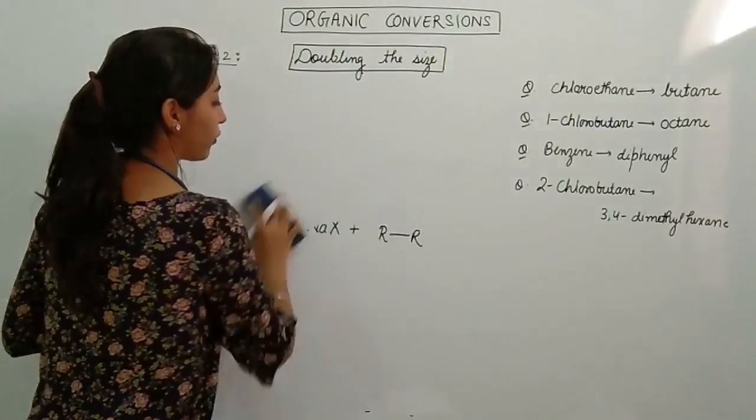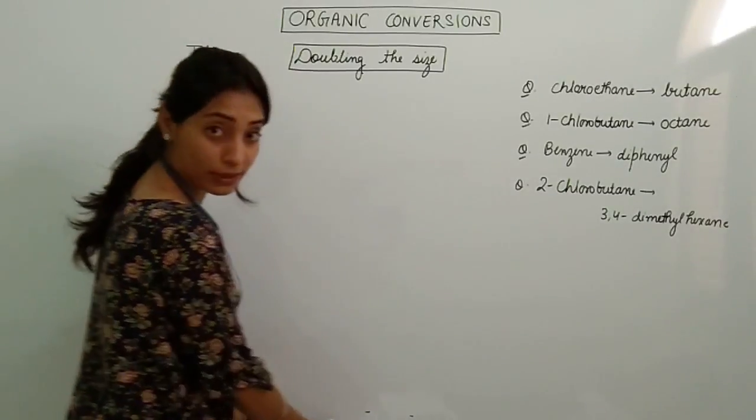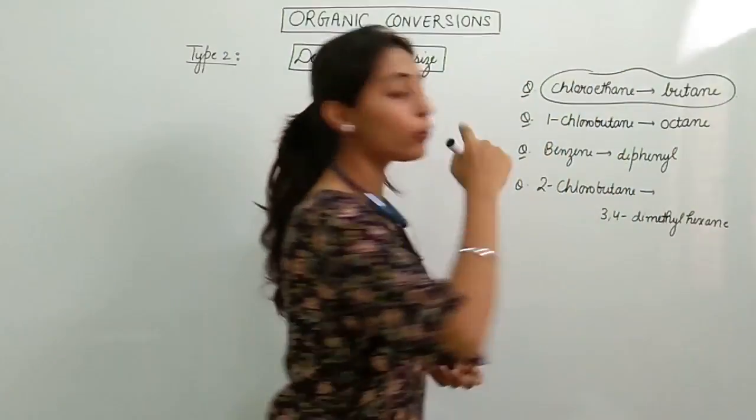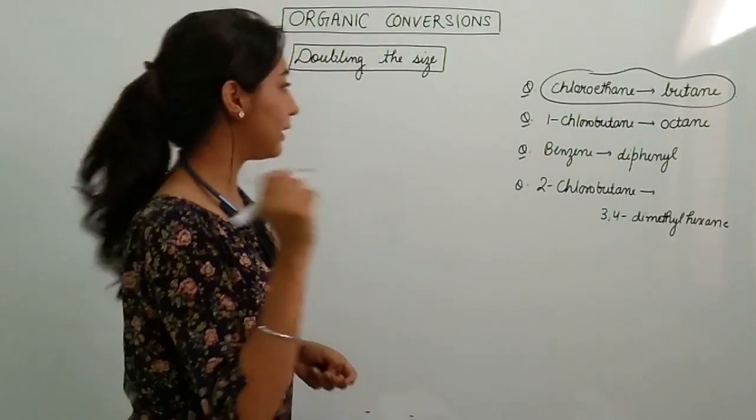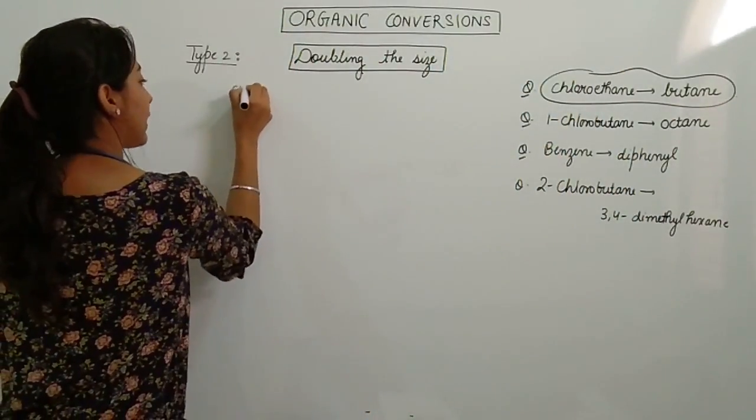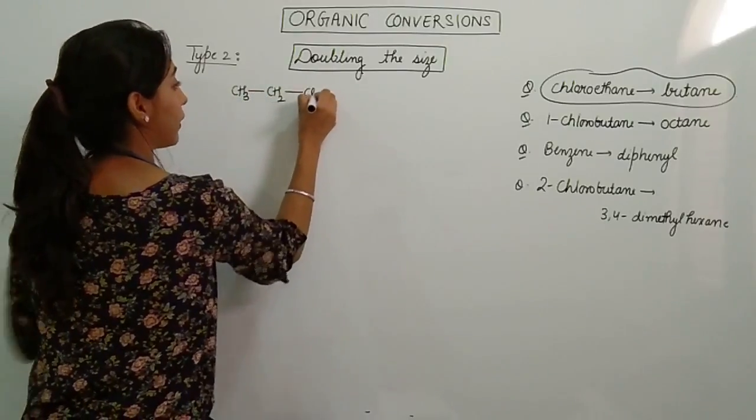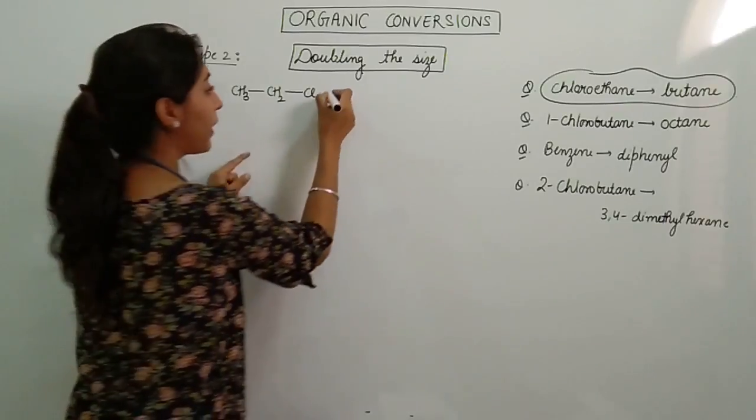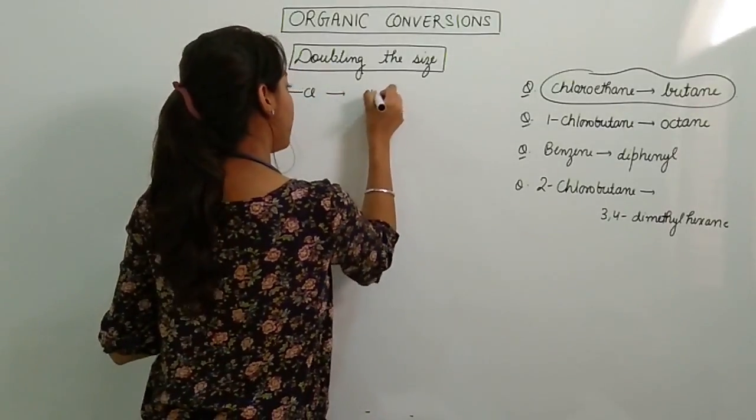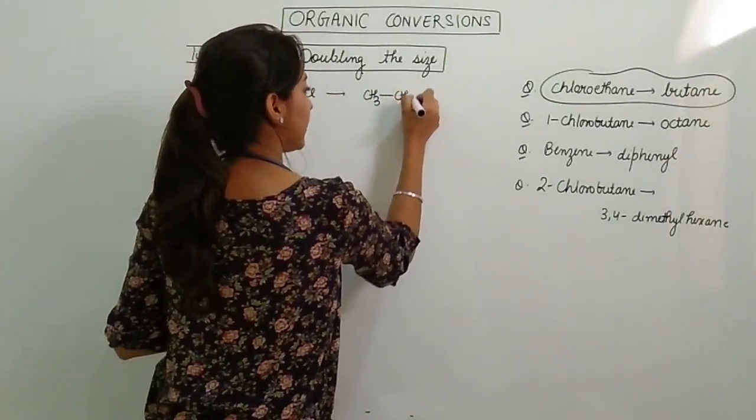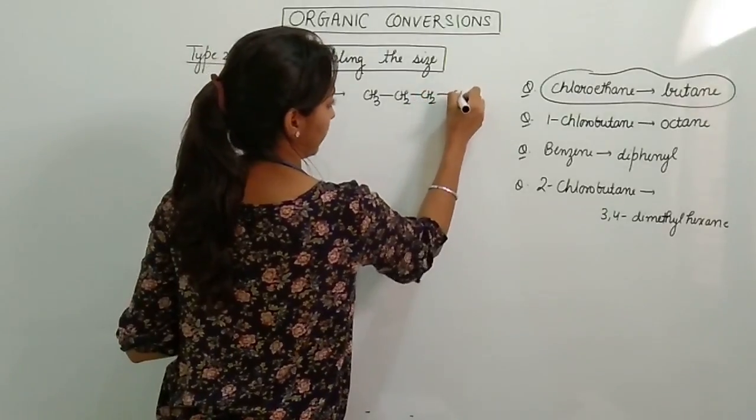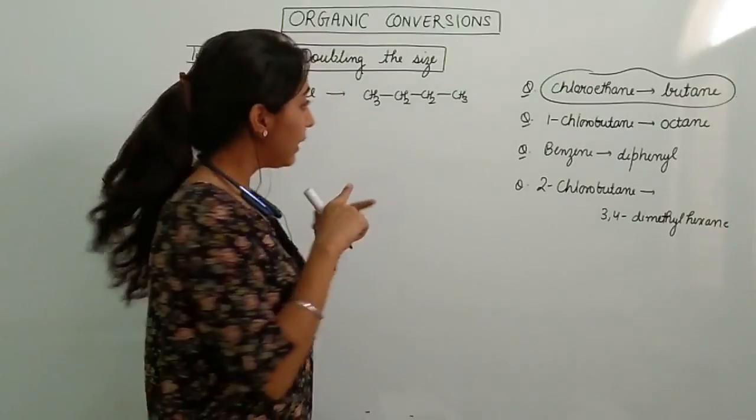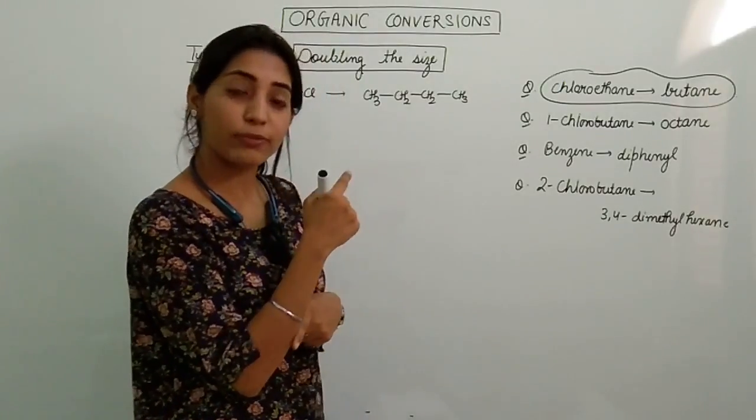Let's start with the first question. Again, I have written here in front of you all the four questions that I picked from NCERT. Starting with the first question, chloroethane to butane. Let's see. First I will write. I love writing this thing. Chloroethane, two carbon atoms and one chlorine atom. And I have to convert it to butane. CH3-CH2-CH2-CH3.